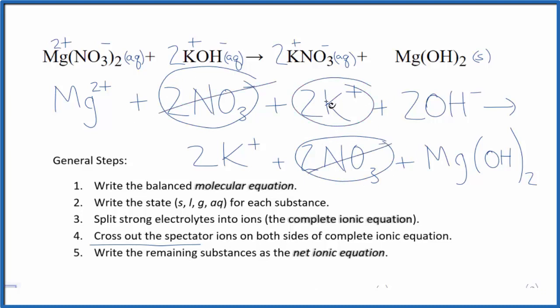Two potassium ions, two potassium ions. Get rid of those. What's left is the net ionic equation for Mg(NO3)2 plus KOH.